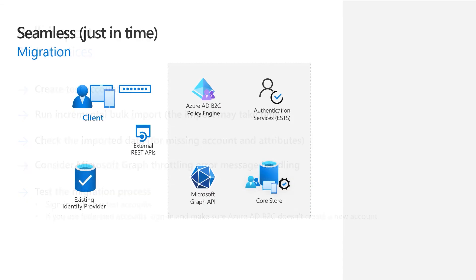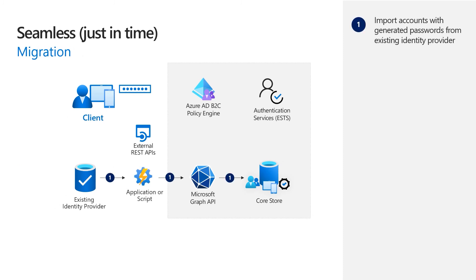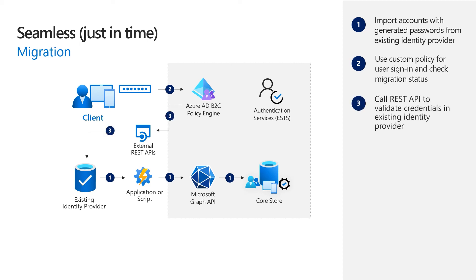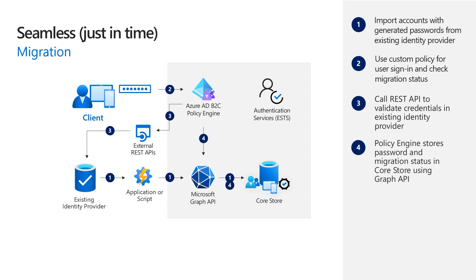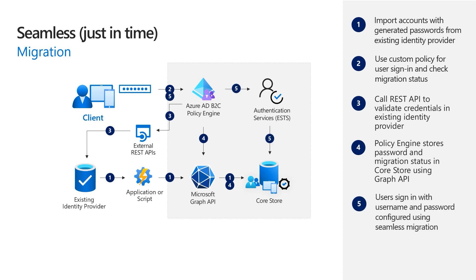The seamless migration flow might still require bulk migration for user accounts to claim existing user data identifiers during the planning phase. Once bulk migration is complete, use a custom policy for user sign-in to read the Azure AD B2C account and check whether the account is flagged for migration. If so, call the REST API — which you create — to validate the username and password in the existing identity provider. Write the password to the Azure AD B2C account if credentials are correct, and set the migration status using custom attributes to indicate that the user account was migrated successfully. Once the password is configured, users can sign in with their local account as usual without calling the REST API.